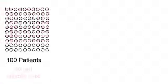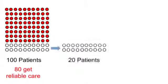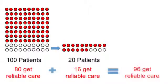Think of the math. If you have 100 patients and 80% of them get reliable care, that means 20 do not get it yet. You then develop a backup plan which is also 80% reliable. Of that 20, 16 patients now get the care. When you add 80 and 16, you have 96.